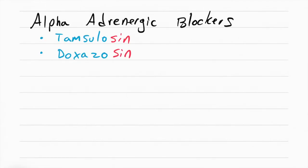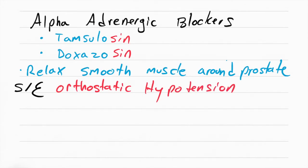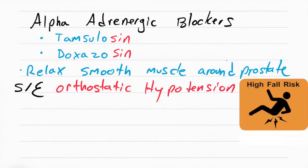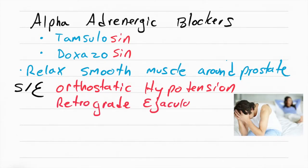The next class of drugs is alpha adrenergic blockers like tamsulosin and doxazosin. These relax the smooth muscle around the prostate, but they also relax the smooth muscle around the entire body, so they cause orthostatic hypotension. Make sure you check blood pressure before giving this drug. They also cause retrograde ejaculation, which means when the male ejaculates it'll go into the bladder and not outside, causing a decrease in sensation.